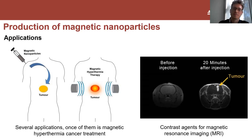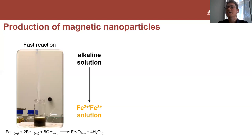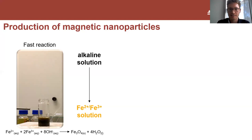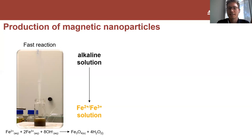We need particles with the right properties, and to make them, we need to understand the process. What you see on the left is a very simple synthesis to make magnetic nanoparticles - we just mix two components. As you can see, things happen very fast, so it's not easy to analyze what actually happened in the first seconds or minutes.